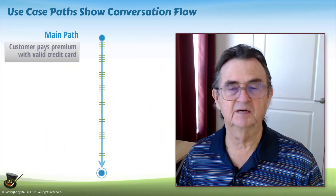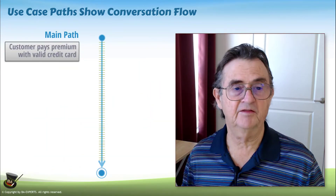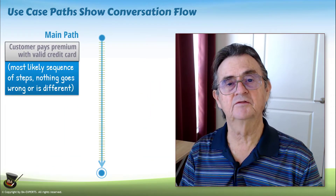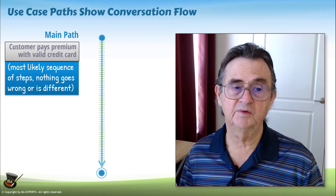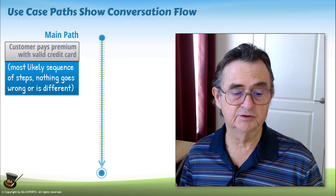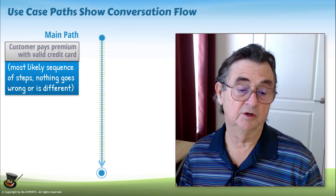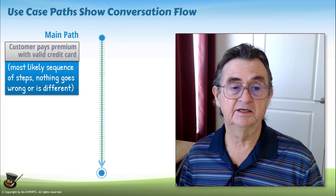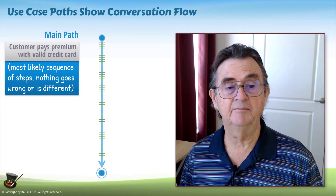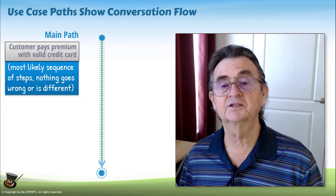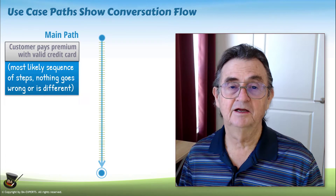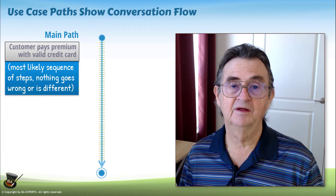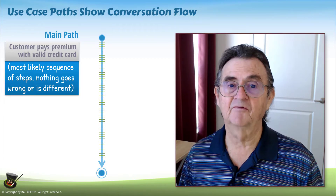There's a thing called the main path, sometimes called the happy path, and that is basically the sequence of events that are going to unfold as you go from the beginning of the use case into the very end of the use case, or the goal of the use case. It's represented as a straight line because it is assumed that nothing is ever going to go wrong — it's always going to work just perfectly and all you have to do is follow the step by step.